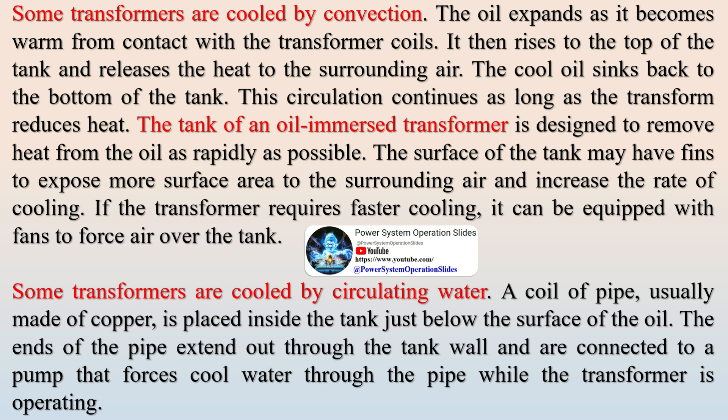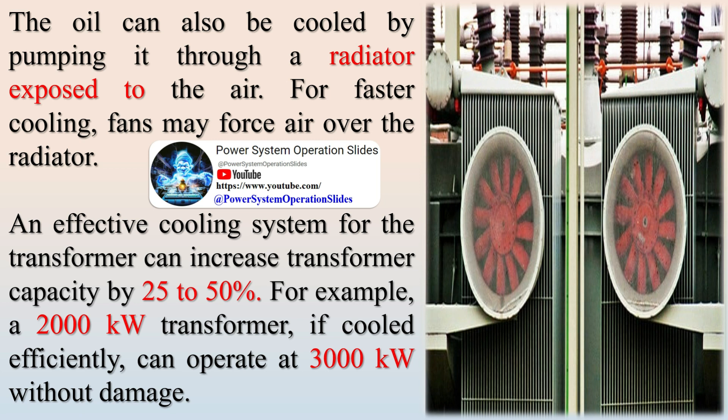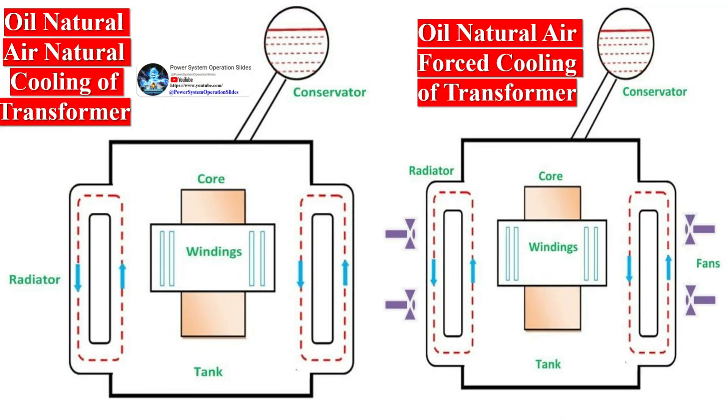Some transformers are cooled by convection. The oil expands as it becomes warm from contact with the transformer coils, rises to the top of the tank, and releases heat to the surrounding air, while cool oil sinks back to the bottom. This circulation continues as long as the transformer produces heat. The tank of an oil immersed transformer is designed to remove heat from the oil as rapidly as possible. The surface of the tank may have fins to expose more surface area to the surrounding air and increase the rate of cooling. If faster cooling is required, the transformer can be equipped with fans to force air over the tank.